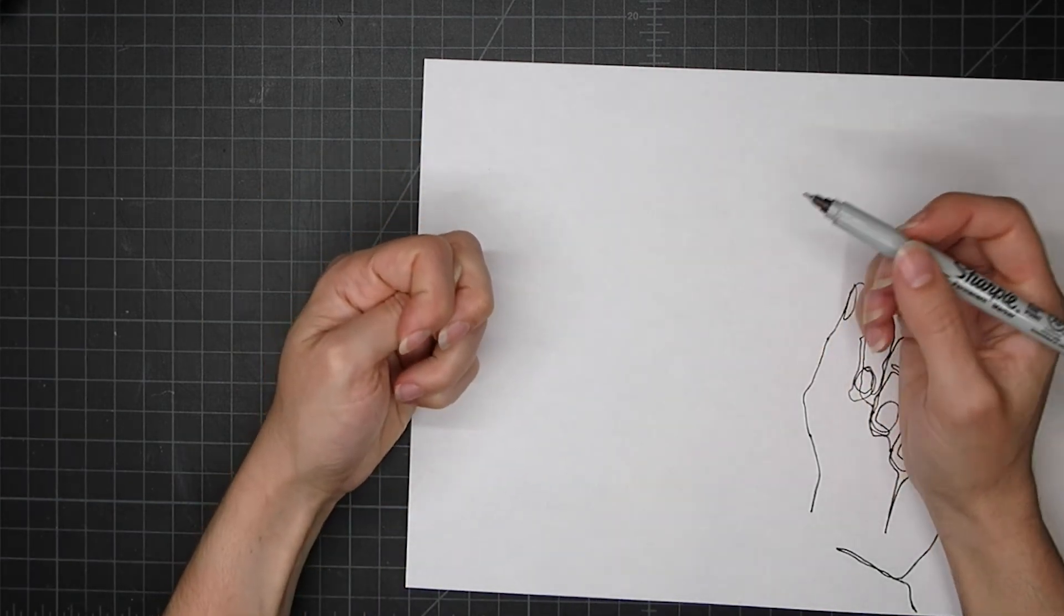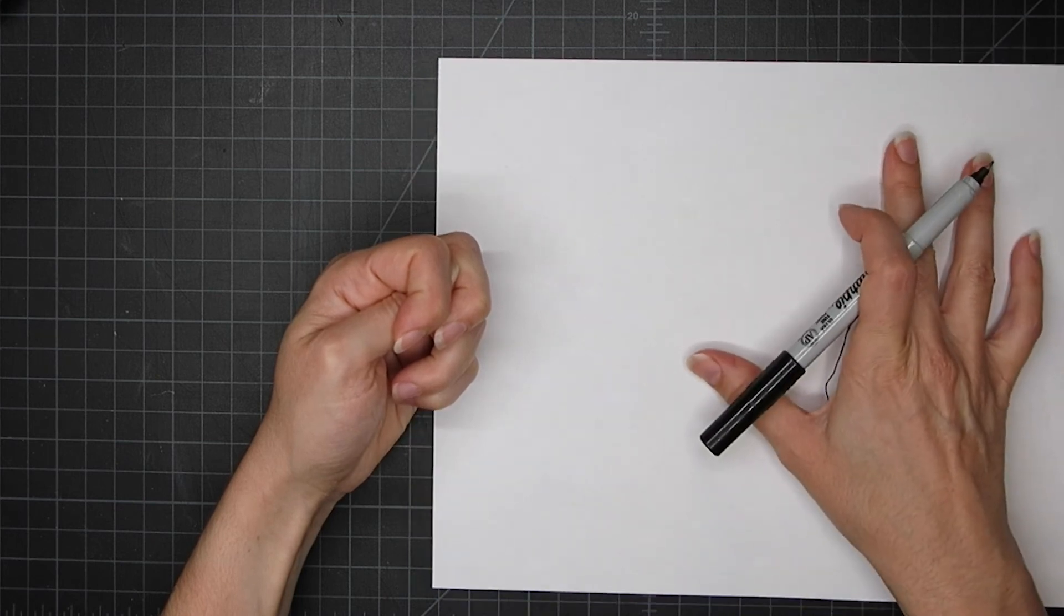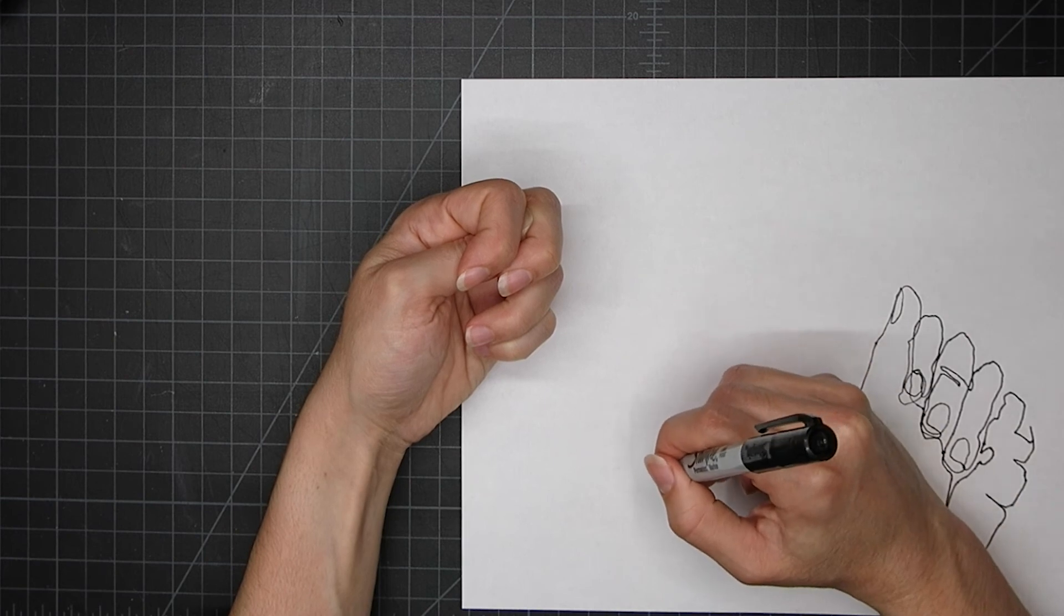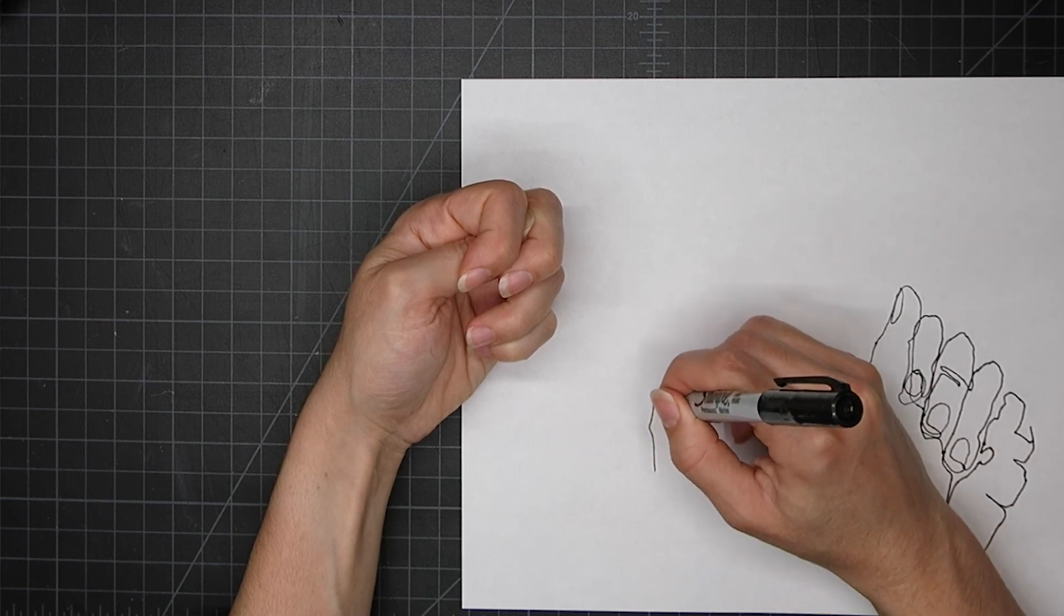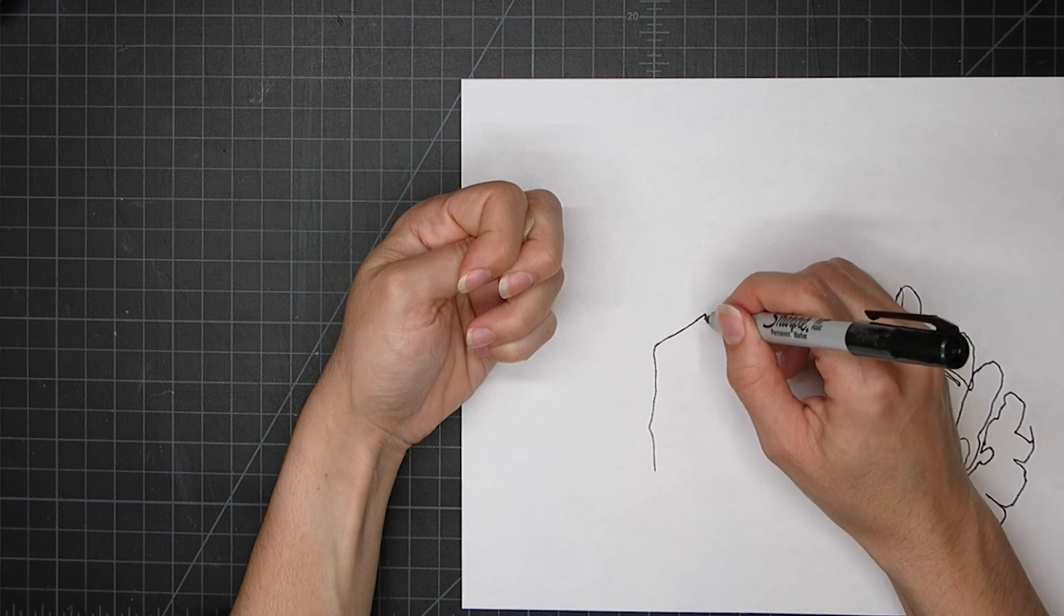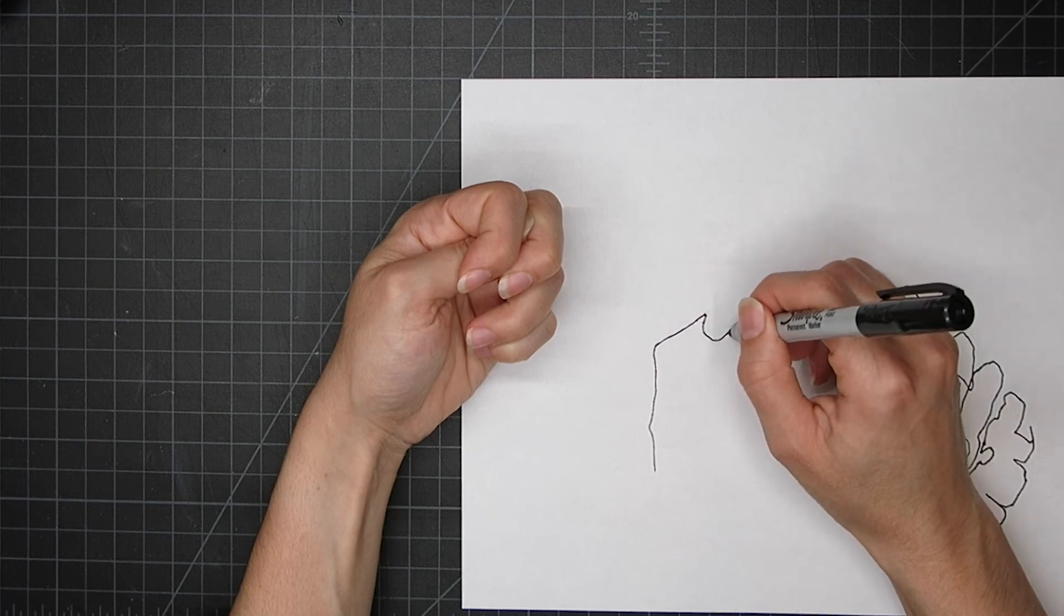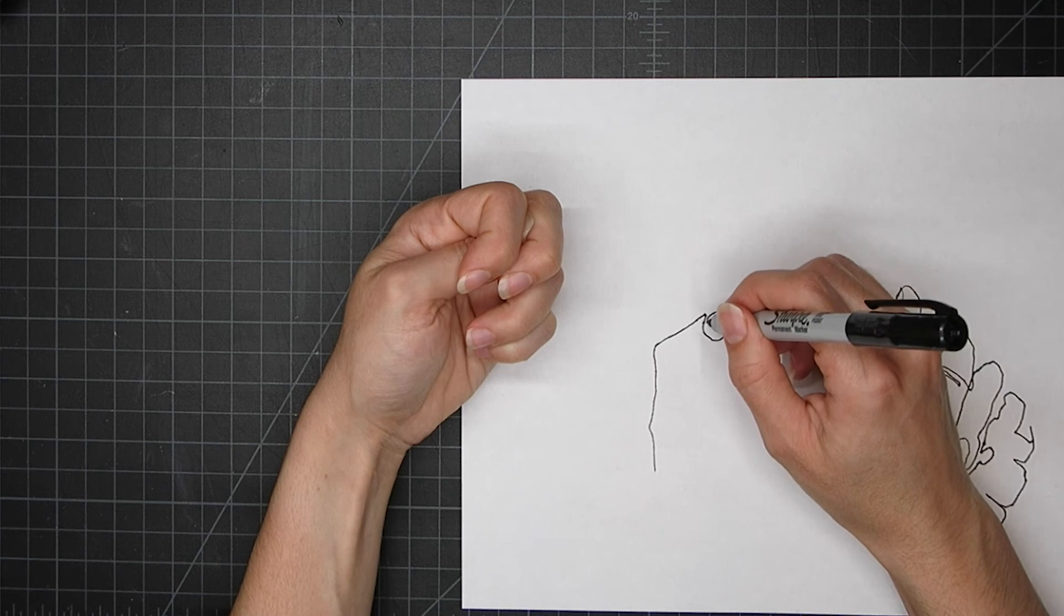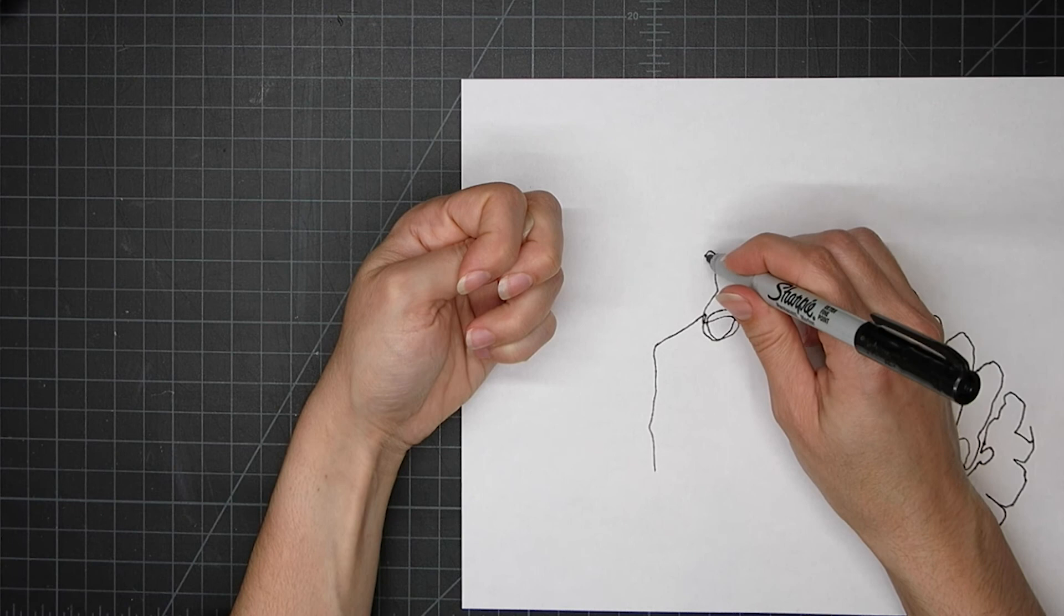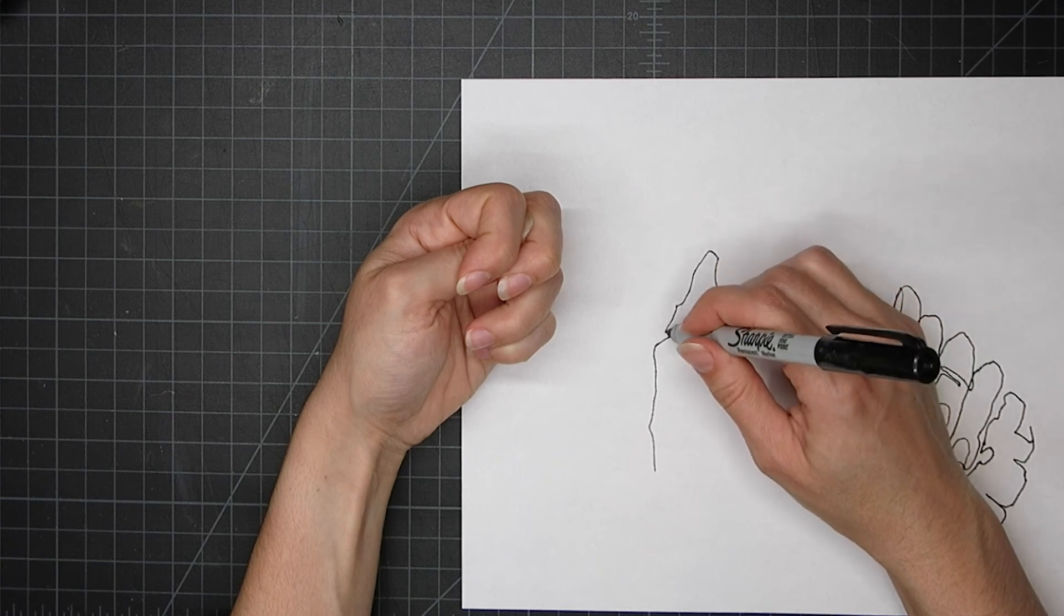Now I'm going to pick a different position, move to a clean spot on my piece of paper, and repeat the same process. Picking a place to start, and then traveling along slowly with my eye, trying to match the movement of my eye with the movement of my Sharpie marker.